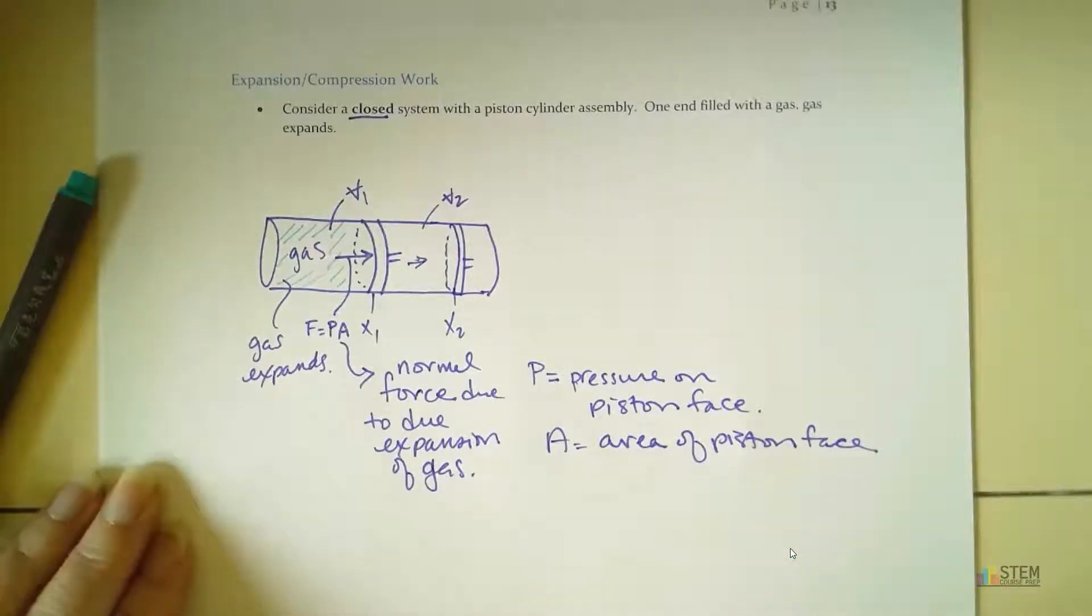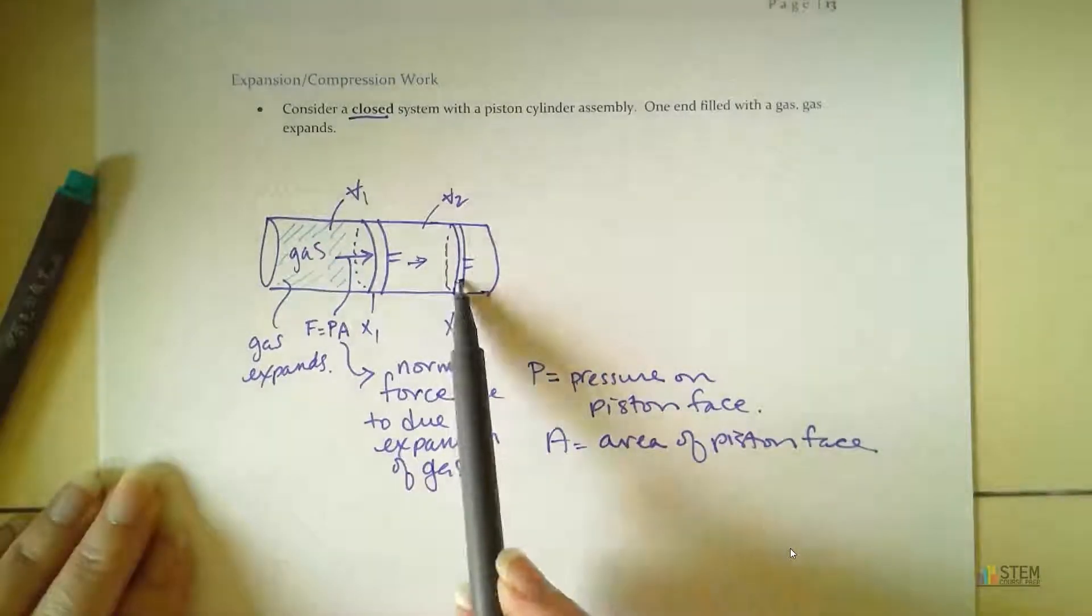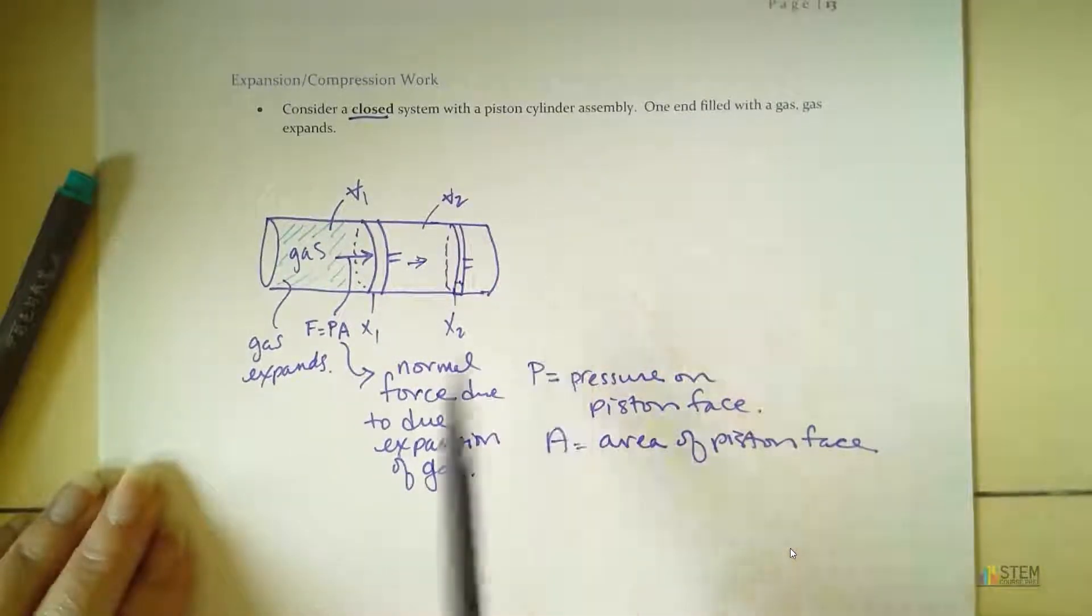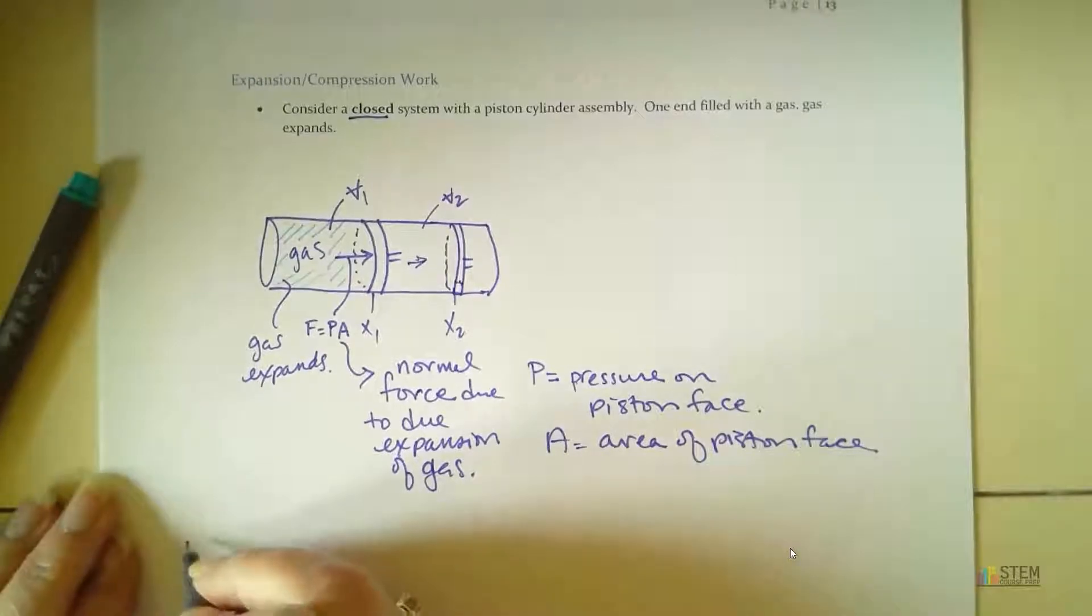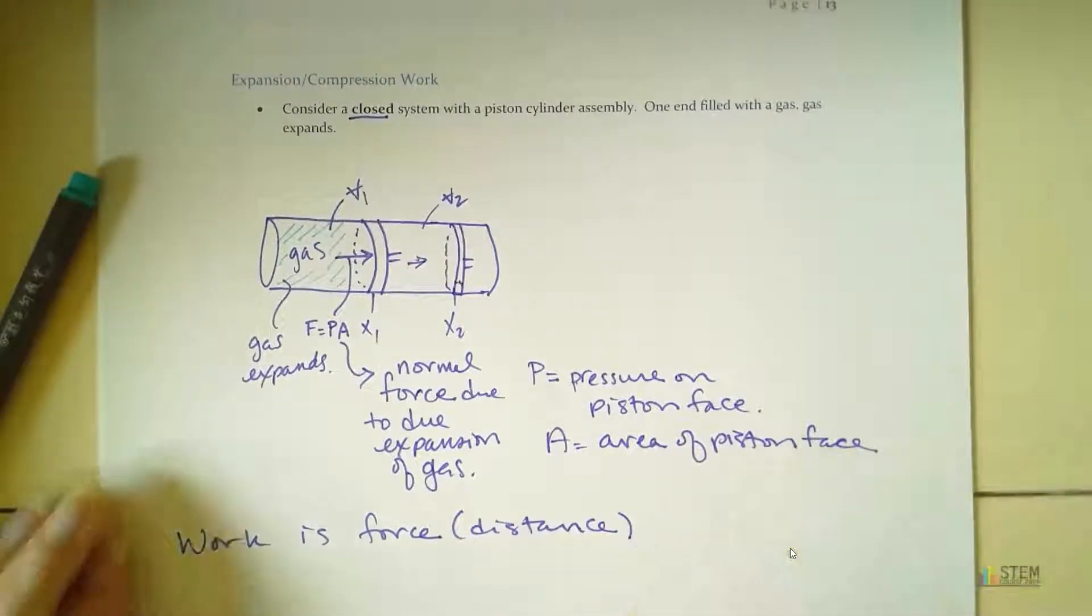And A would be the area of that piston face that's in contact with the gas. So now we've got that. Now what we want to do, since we move this piston, all right? Think about this as being a weight. We were able to move that weight, right? We moved it. So we've got work being done. So work is force times distance.